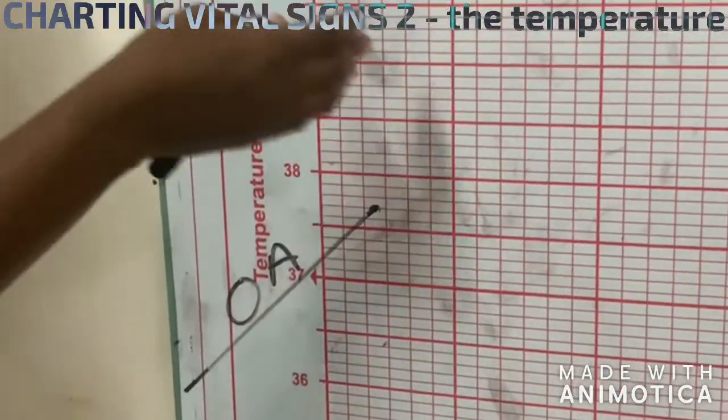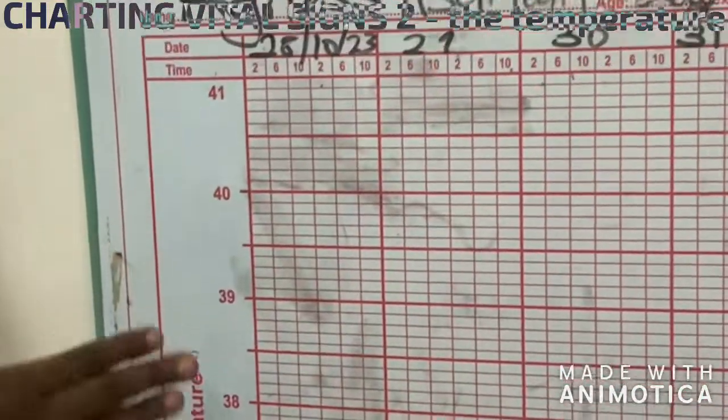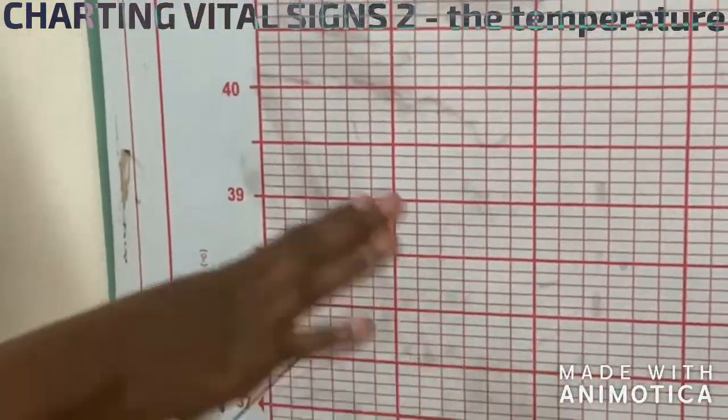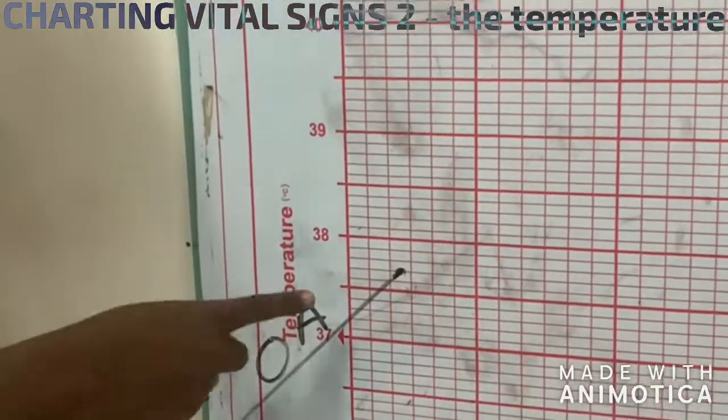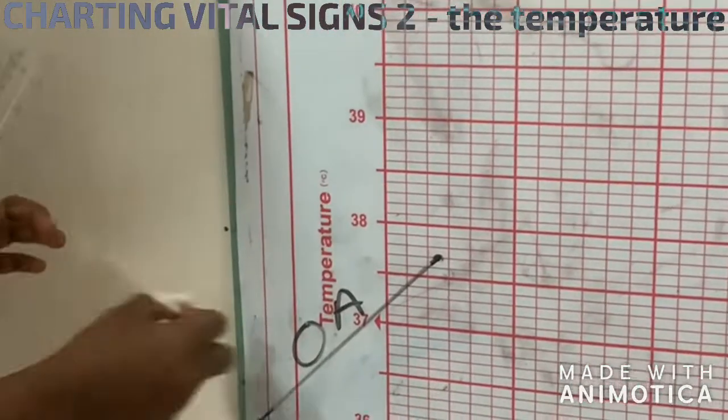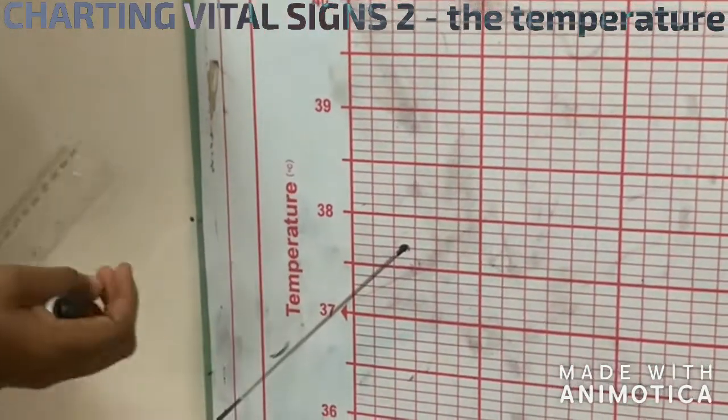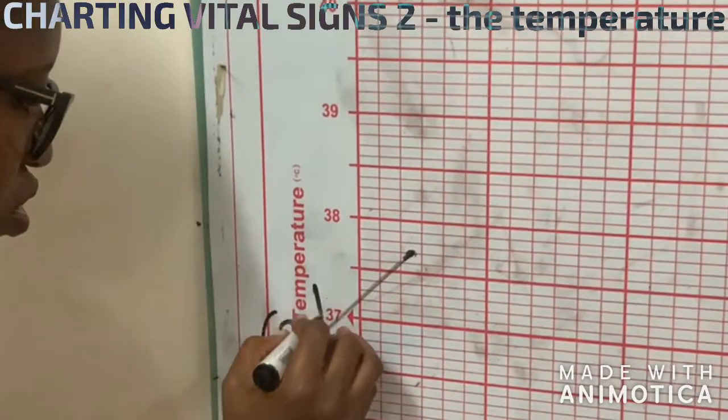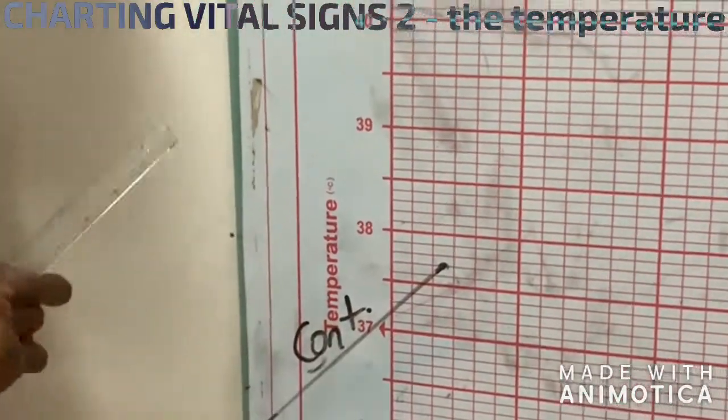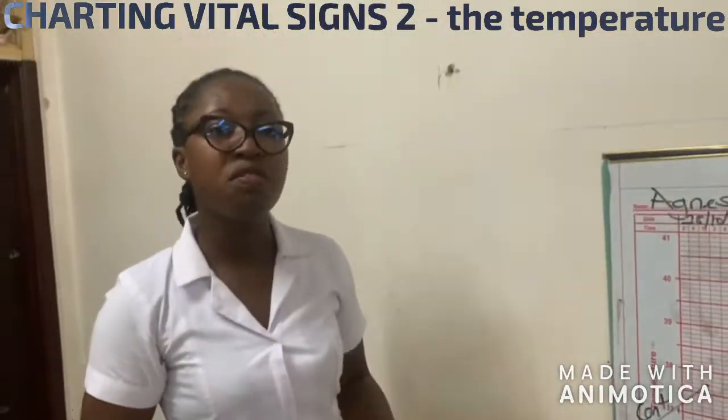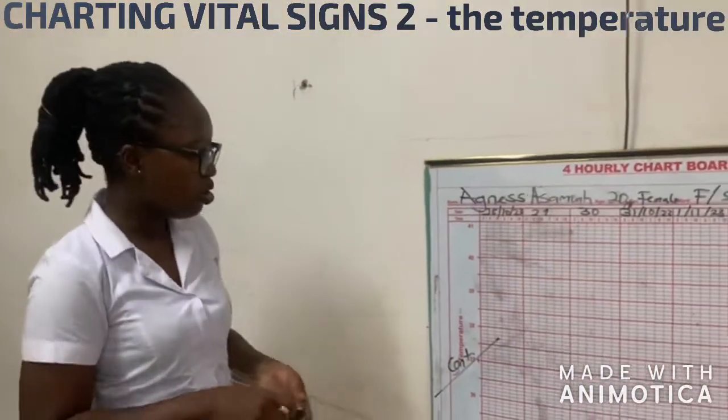In other instances, if this sheet is the second sheet, maybe the patient has finished one week and we have put another sheet on it, then this cannot be on admission. This is a continuation from a previous sheet, so you write 'continuation' to tell anybody reading the chart that this is a continuation from another chart.